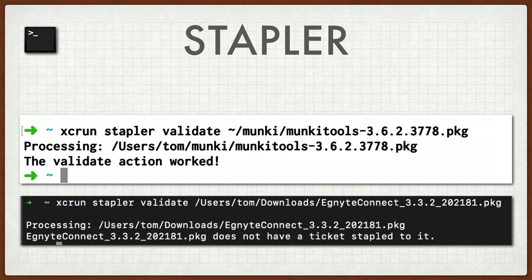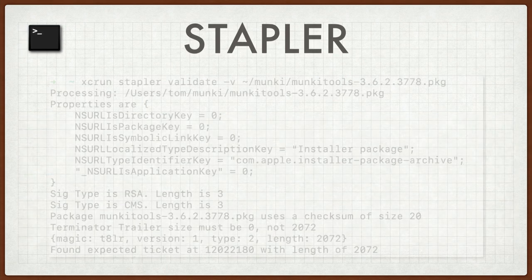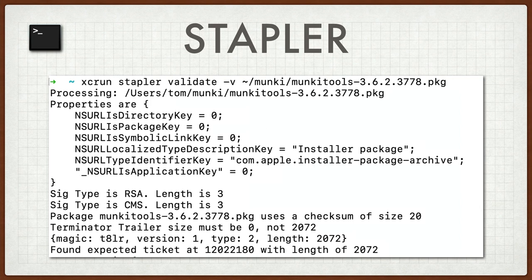The one below it, which is a package of Ignite Connect's kernel extension install package from about a week ago — this is 10.14.5. We do have to sign and notarize kernel extensions. And basically what it says is: hey, by the way, this package does not have a ticket stapled to it, period, full stop. So if you're using Ignite, you might want to throw in a support ticket and say, can you please notarize your download packages? Let's go take a look at the verbose version of the process for looking at the Monkey Tools statement. I strongly encourage that you take a look at what's stored here in its entirety because it's interesting. It's basically showing all of the properties associated with this package, the type of signature in use, the checksum size, and a whole bunch of metadata.